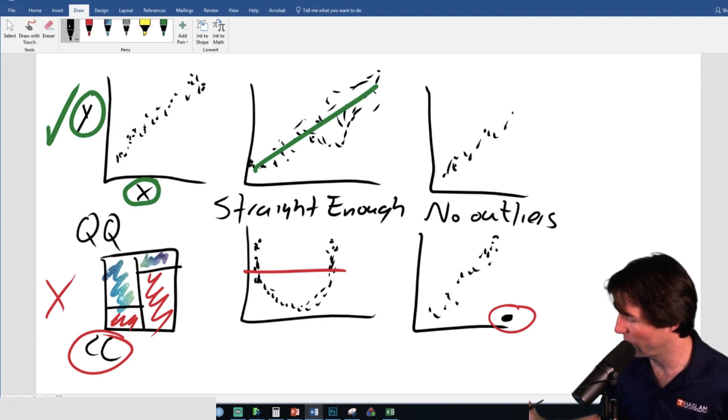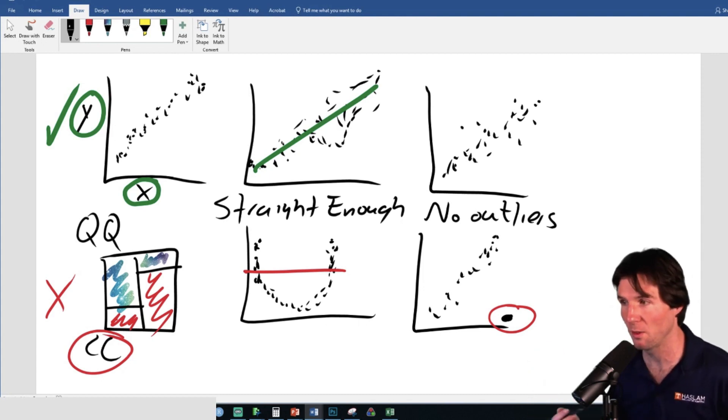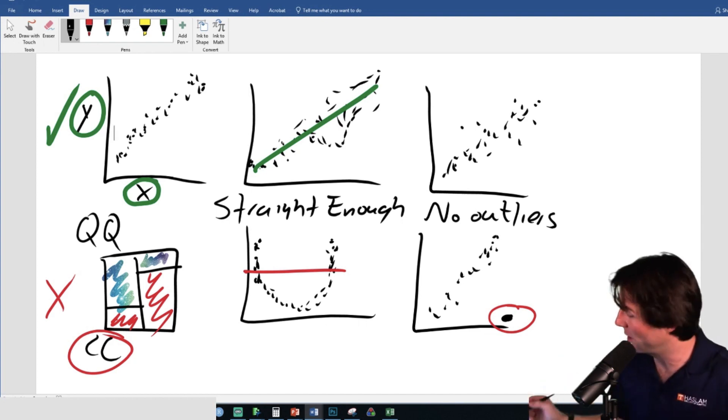So we'll draw a nice, perfect one up here. And it can have, yeah, sure, whatever. This doesn't really have any big outliers. Every residual plot will look, or every plot will look a little bit different. But there should be no outliers. Even that, it's probably not a big thing.